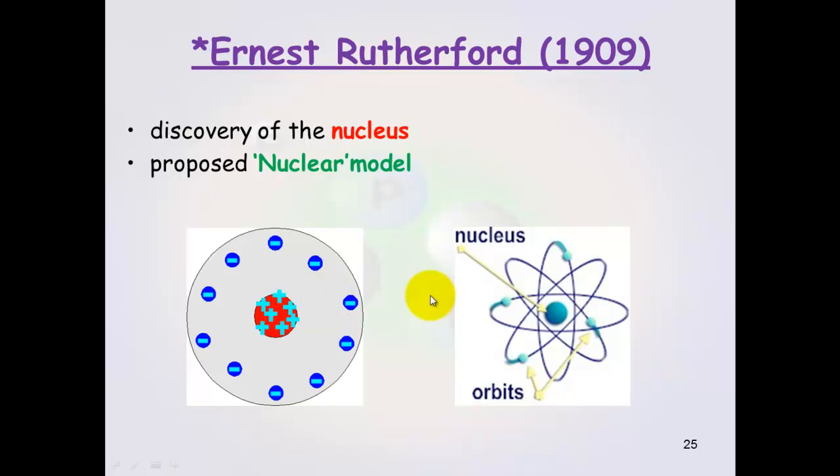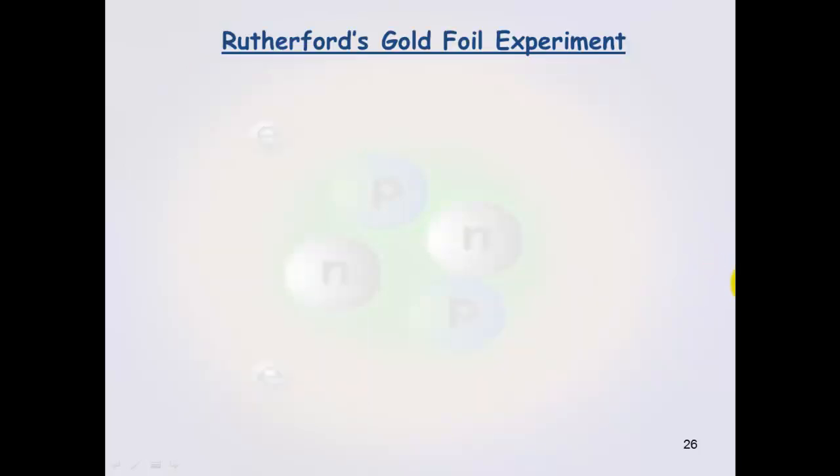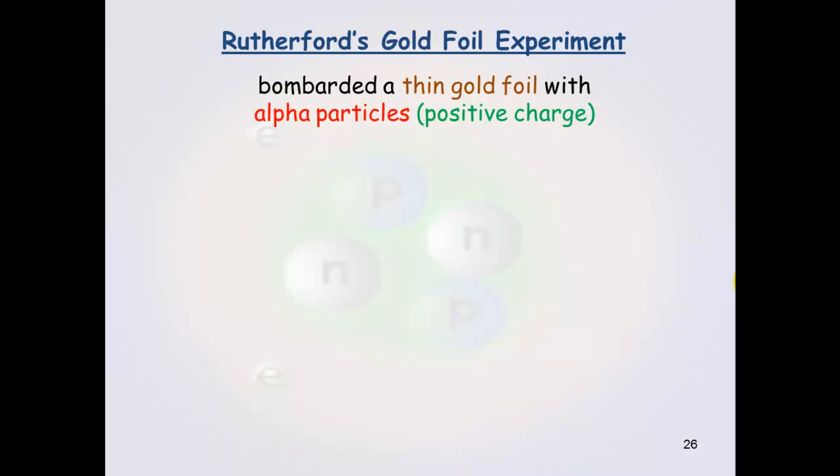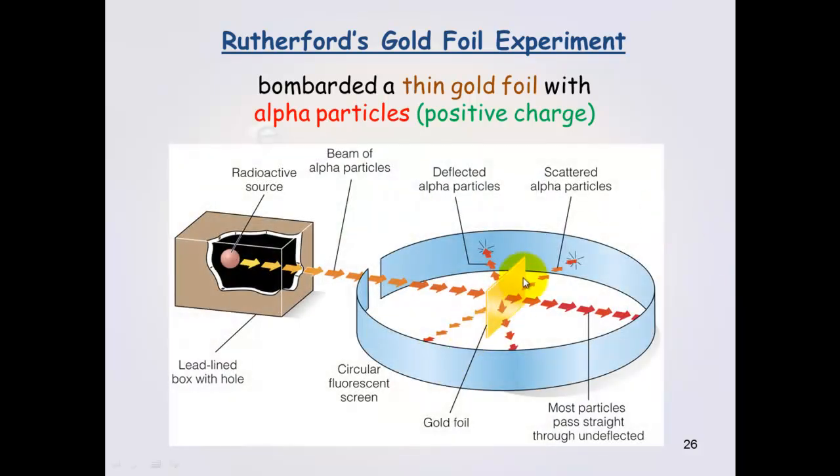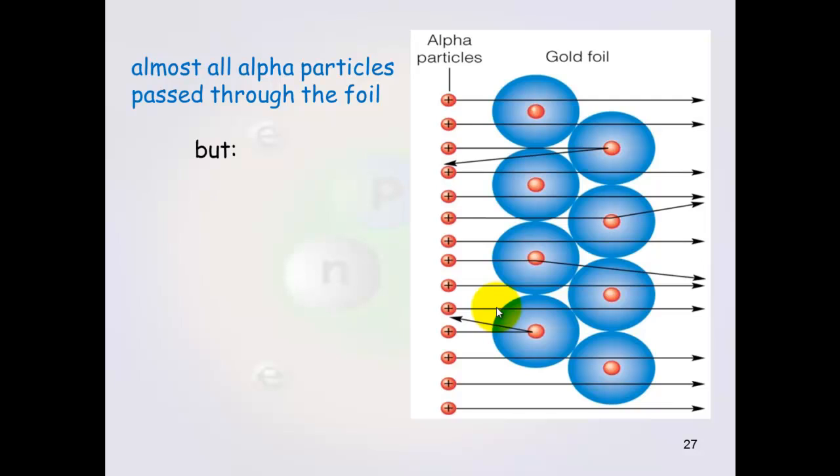The way he discovered this was what's called the gold foil experiment. What he did was he got a piece of gold foil and he bombarded this. So he threw out alpha particles which are positively charged particles against this gold foil. And this is what happened when he did this.